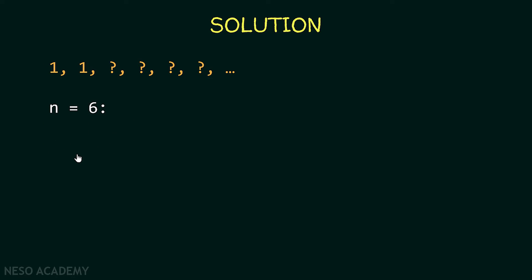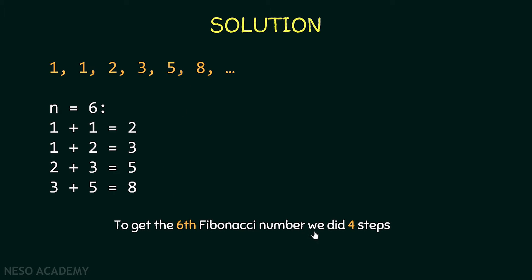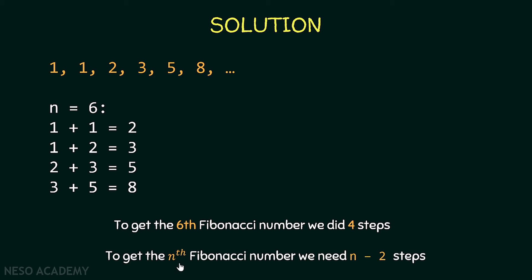Let's see another example. Suppose n is equal to 6. First, 1+1=2, then 1+2=3, then 2+3=5, and finally 3+5=8. So to get the 6th Fibonacci number we did 4 steps — 4 operations.